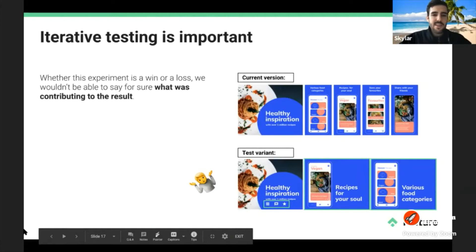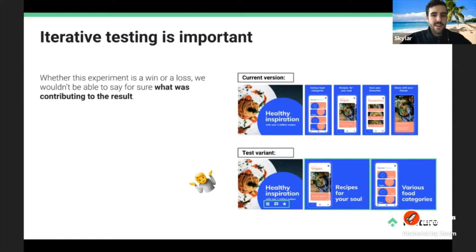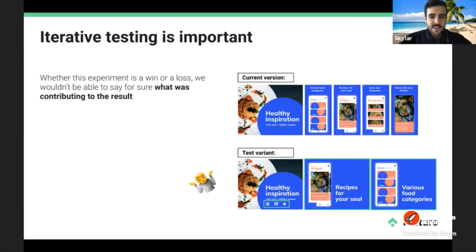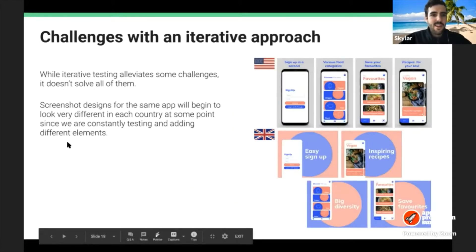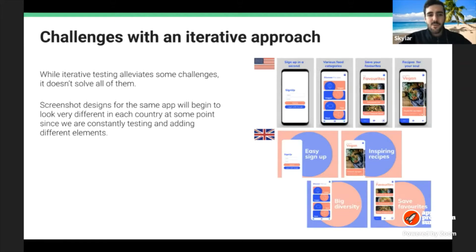The problem here is that whether the experiment is a win or a loss, we can't say for sure what actually contributed to the result. Is it because the copy is more readable? Is it because we moved a different feature up in the screenshot order? Is it because the iconography resonated with people better? This is one of the key issues with non-iterative testing. That said, while iterative testing alleviates some challenges, it's not the be-all end-all — we'll discuss a solution later.